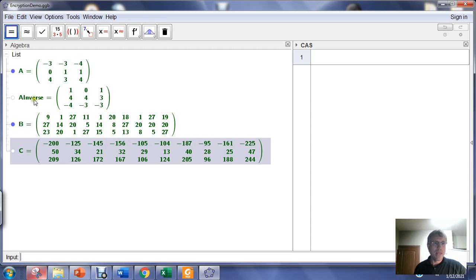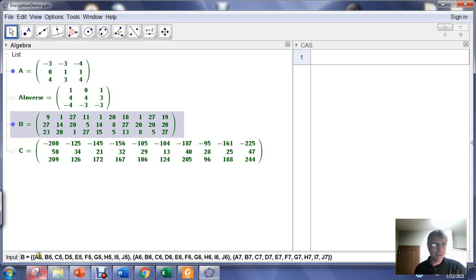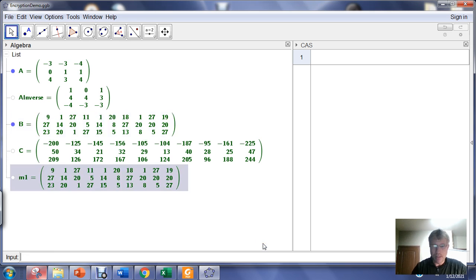They have to have A inverse which is right here. Here's A inverse, they need to have this matrix in their possession, and they're going to multiply A inverse times C and that should give them B back. So if we take A inverse, down here in the input bar, and multiply that by the encoded matrix that we just made right here, A inverse times C, what we'll notice is that that generates our new matrix M1 that gives us the original encoded matrix back.